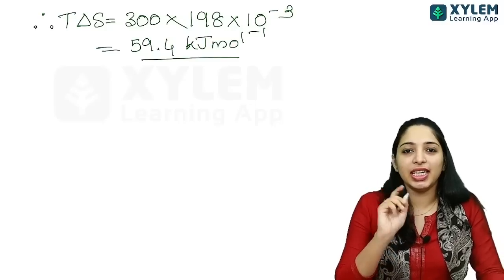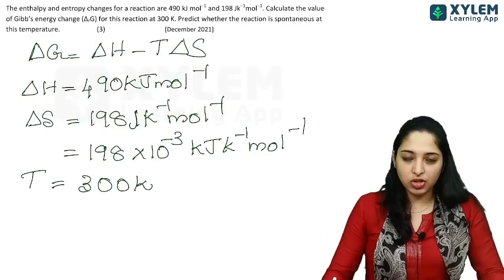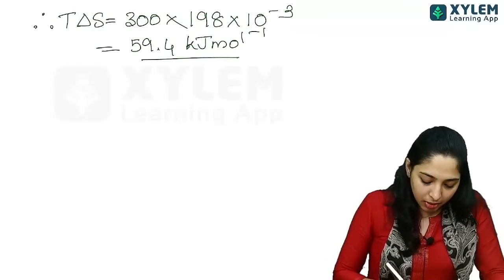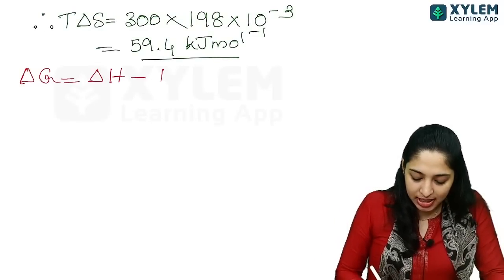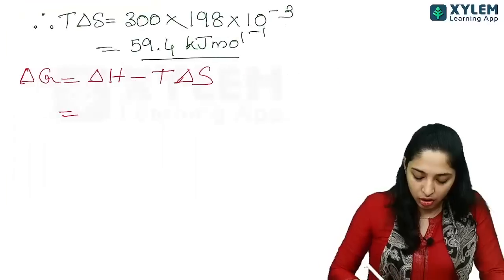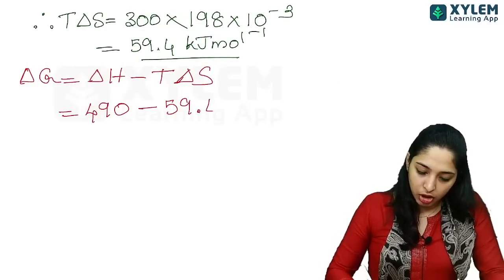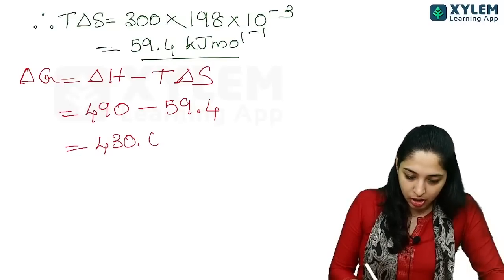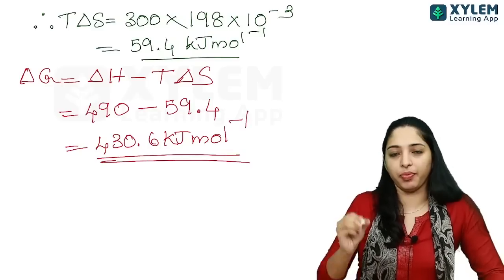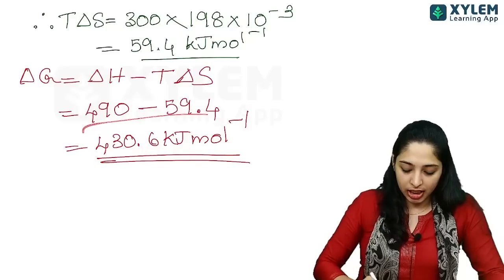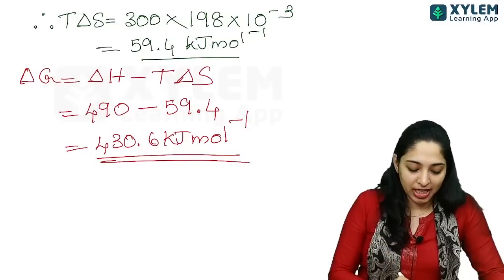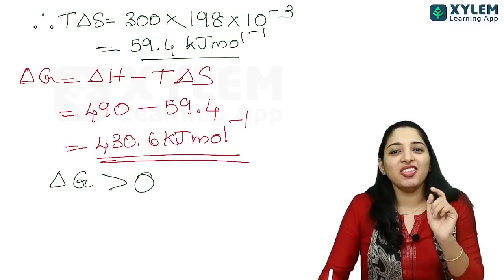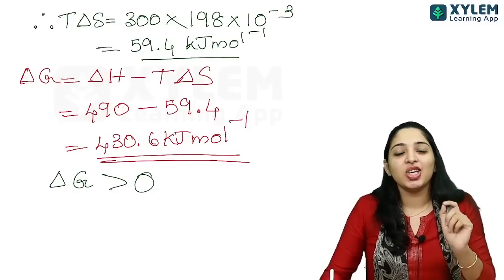Now substituting into delta G equal to delta H minus T delta S: delta H is 490 kilojoules per mole and T delta S is 59.4 kilojoules per mole. Therefore, delta G equals 490 minus 59.4, which equals 430.6 kilojoules per mole. Since delta G is greater than zero, the reaction is non-spontaneous.